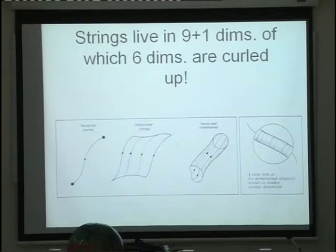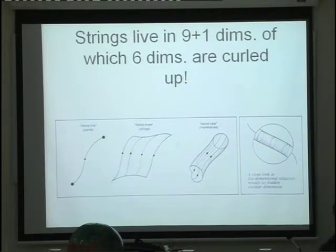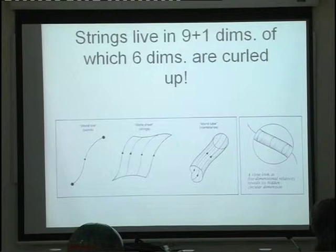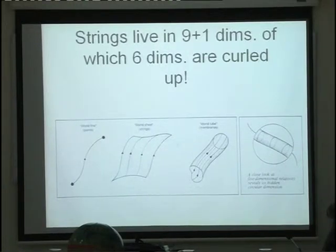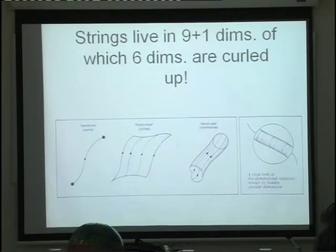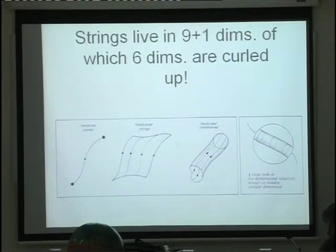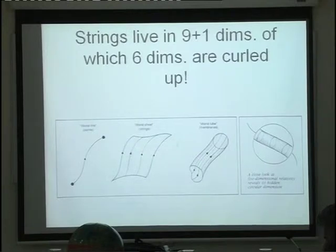String theories are consistently formulated in nine-plus-one dimensions, and you might wonder since our world is three-plus-one, what happens with the other six dimensions. If you could invent an experimental microscope you could discover the higher dimensions. Imagine a rod — up close it looks like a two-dimensional surface, but from a long distance it appears like a line. Depending on your resolution, there is a dimensional reduction. You may be living in a world of higher dimensions, but your resolution is not good enough to detect it.